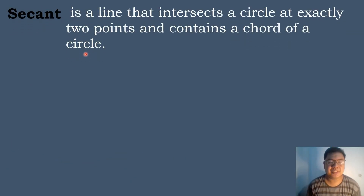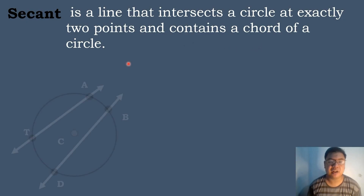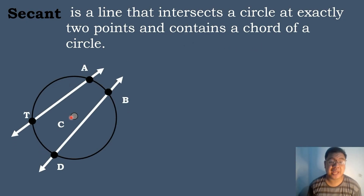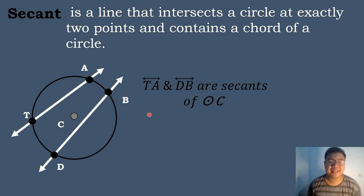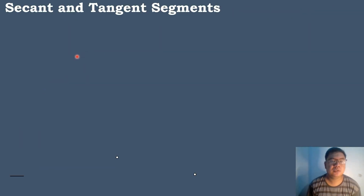Let's now proceed with the secant. When we say secant, it is a line that intersects a circle at exactly two points and it contains a chord of a circle. In this given, we have circle C and the two secants of circle C are line TA and line DB.